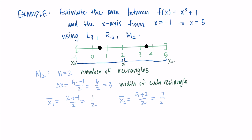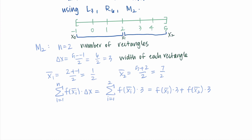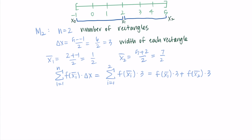The bar notation represents average — it helps distinguish the midpoints from the other labeled values. The midpoint Riemann sum formula is the sum from i = 1 to n of f(x̄ᵢ) · Δx. With n = 2 and Δx = 3: sum from i = 1 to 2 of f(x̄ᵢ) · 3. Written out: f(x̄₁)·3 + f(x̄₂)·3.